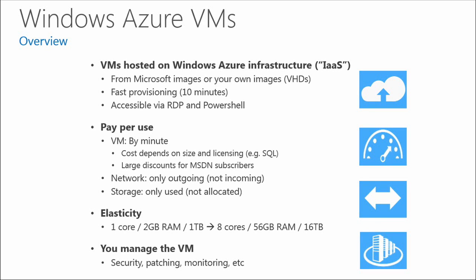Elasticity is a very powerful concept. It's easy to change the size of your Virtual Machine through the portal — it takes a couple of minutes, and you can go from one core and two gigabytes of RAM to eight cores and 56 gigabytes of RAM. We're always introducing new sizes. Finally, you have a high level of control similar to on-premise, but that also means you have responsibilities — security, patching the operating system, and monitoring are all your responsibility, just as with on-premise Virtual Machines.